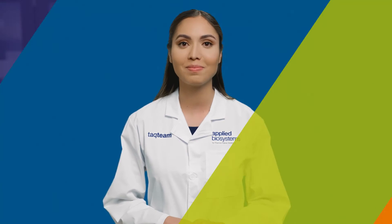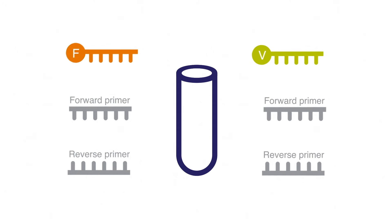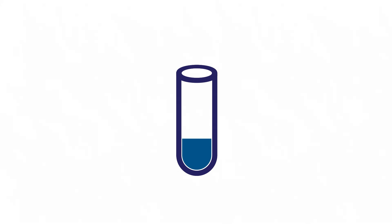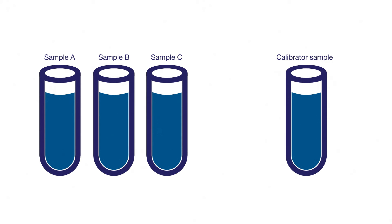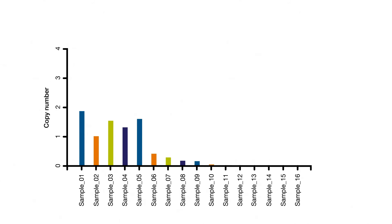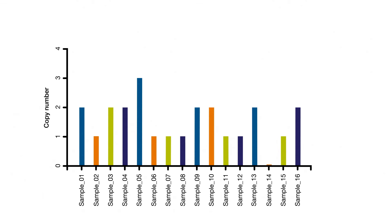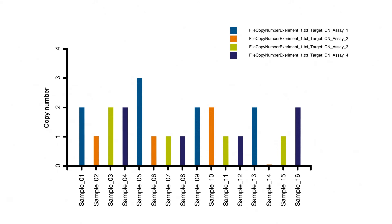Another type of genotyping analysis is copy number variation, or CNV analysis. In CNV analysis, two assays are multiplexed in a single reaction well — one is a reference assay and the other is the target assay. In addition to the test samples, CNV analysis also requires a calibrator sample with a known copy number. We offer free, specialized software for CNV analysis that uses a sophisticated algorithm to perform comparative CT analysis and call copy numbers for samples with confidence values.